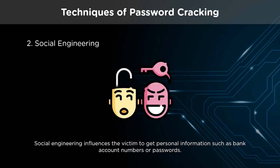Social engineering influences the victim to get personal information such as bank account numbers or passwords. This strategy is popular among hackers because they realize that humans are the gateway to vital credentials and information. Through social engineering, hackers use tried and true tactics to exploit and influence age-old human tendencies rather than devising novel means to breach secure and advanced technologies. It has been demonstrated that many firms either lack adequate security or are overly friendly and trustworthy, allowing access to critical facilities based on a uniform or a sob story.